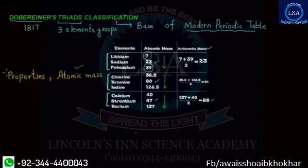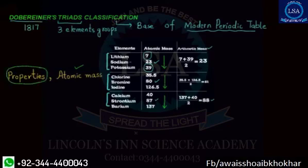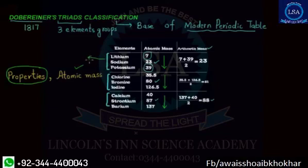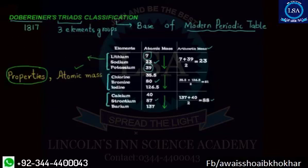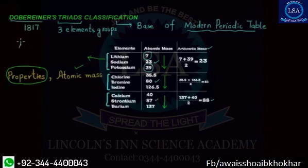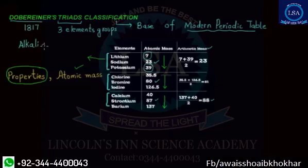What does this tell us? It tells us about the properties of the elements. Within one triad, all elements share similar properties. If we talk about the first triad, we call them alkali metals.